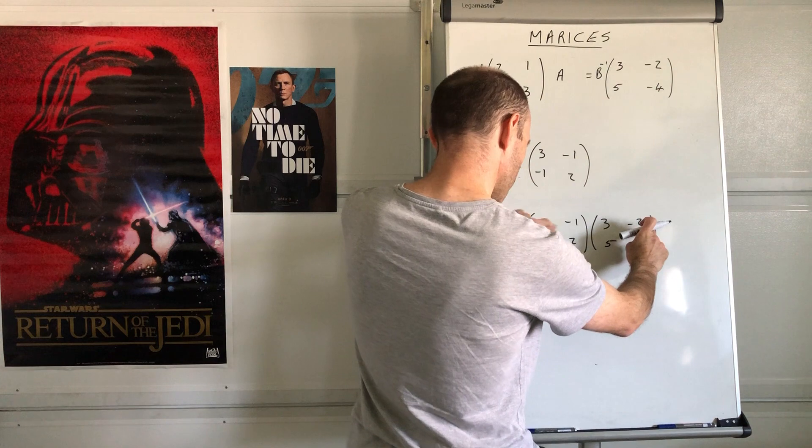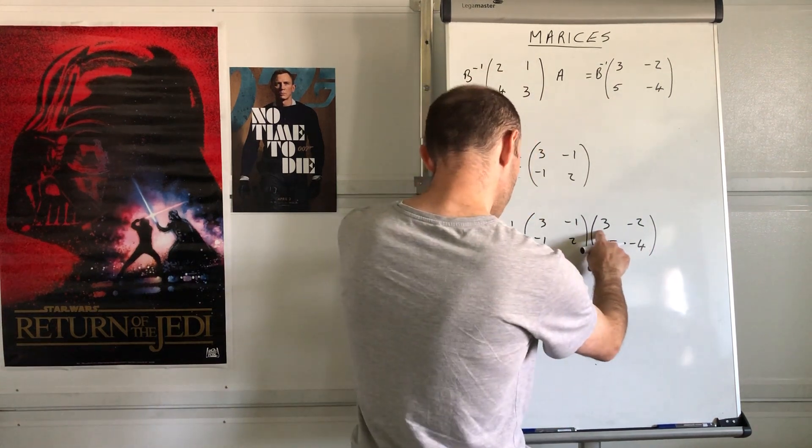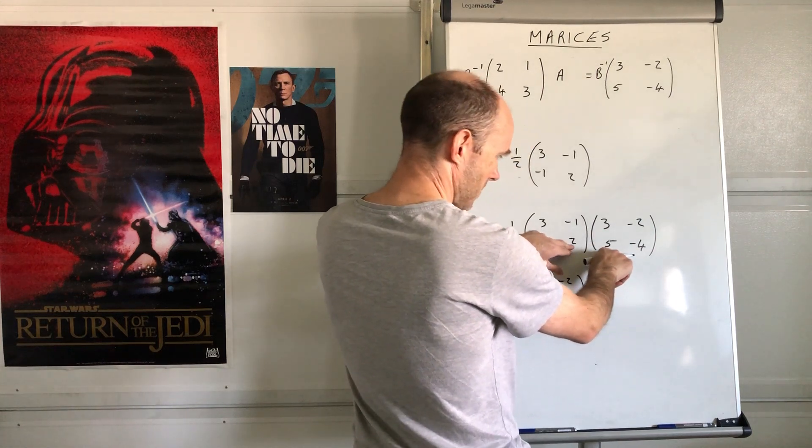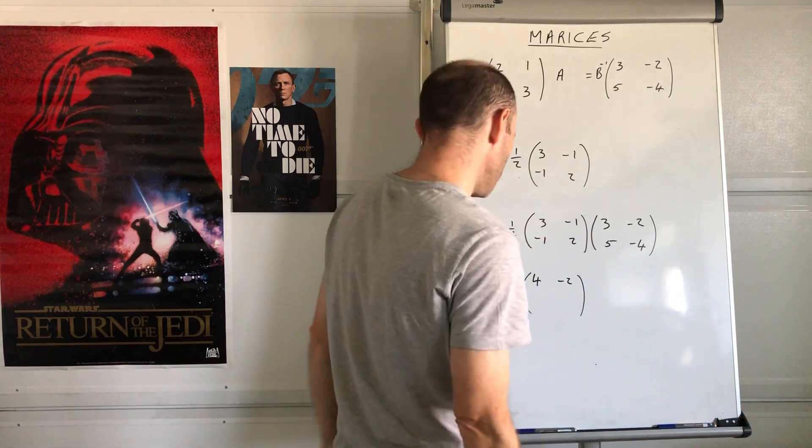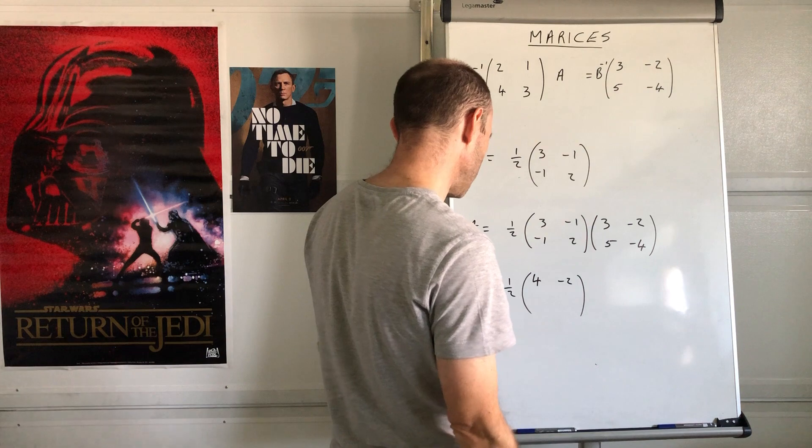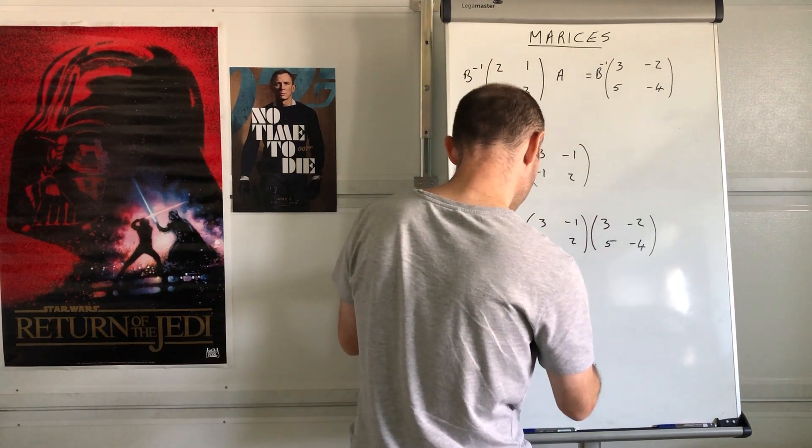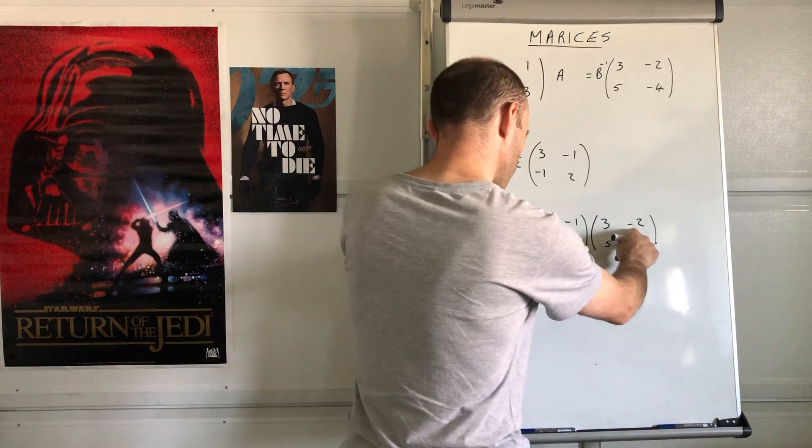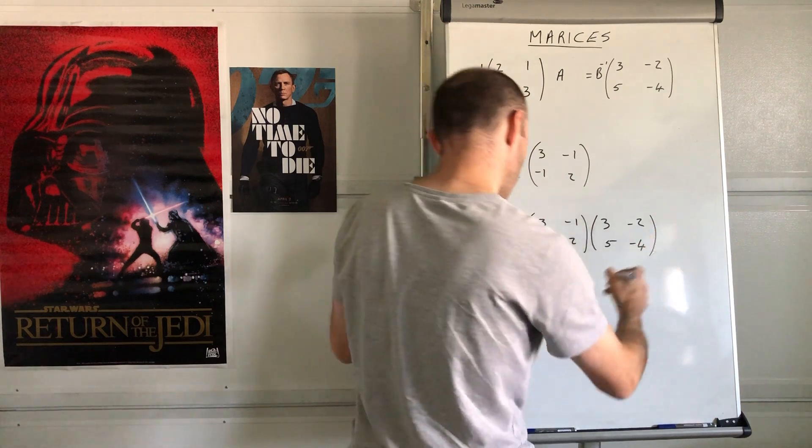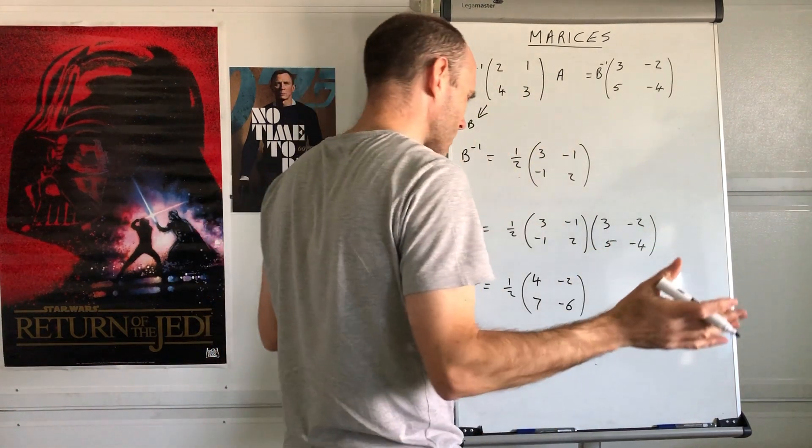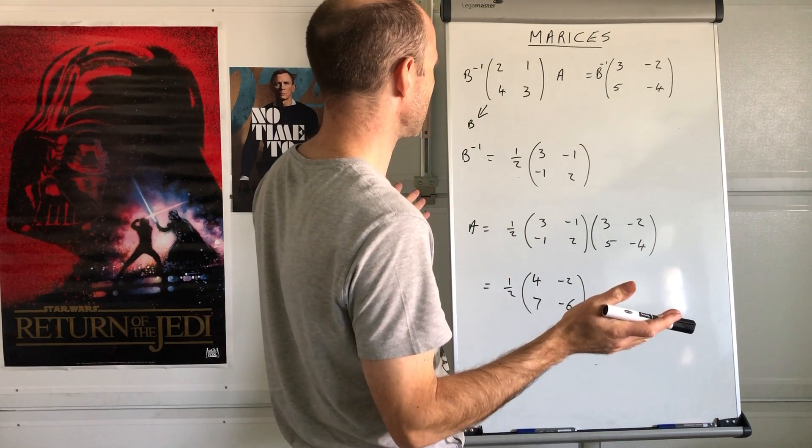And then -6 plus 4 is -2. And then this one here is going to be -3 plus 10, plus 7. That's going to be 2 subtract 8, -6. That doesn't sound right to me. That doesn't sound right to me at all.